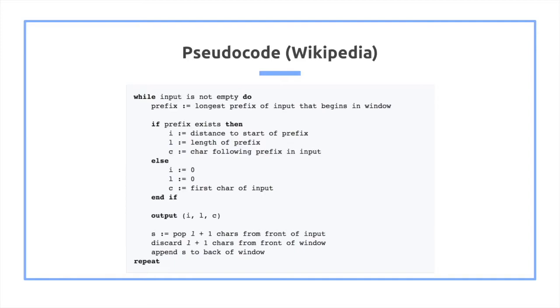The pseudocode is the following. So while the inputs are empty, we first get the longest prefix of input that begins inside that window dictionary. If such a prefix exists, we get the length of it, the length of the prefix, and the character following the prefix in the input.